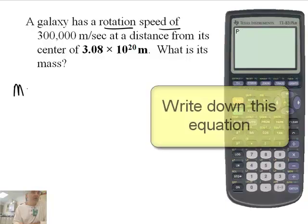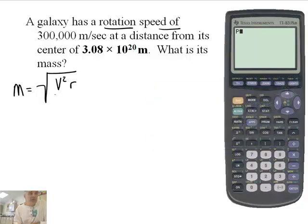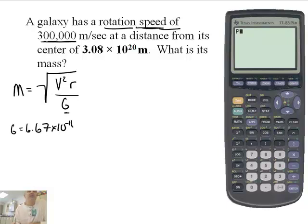The mass of a galaxy is equal to the square root of the velocity squared times r over G. Now, remember, G is something we've learned about before. G is 6.67 times 10 to the minus 11th. All right, so we now know the speed. That's the v right here, the 300,000. And this is the distance from the center of the galaxy.